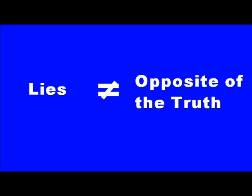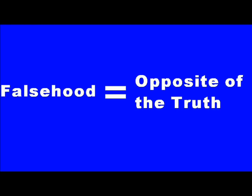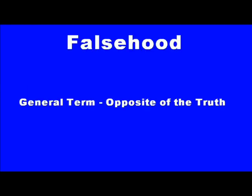Lies aren't exactly the opposite of the truth. The opposite of the truth is something called falsehood. Falsehood is a very general term — it just means anything that's not true. It's such a general way to say the opposite of truth that I probably won't give it a whole segment. Lies are pretty specific, though. They're not true either, of course, but there are a couple of things to remember about lies that make them different from falsehoods.